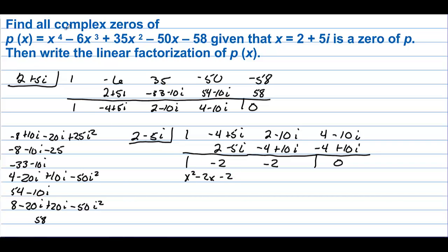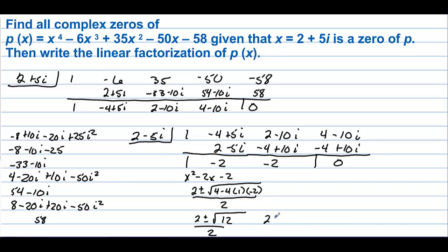Now x squared minus 2x minus 2 doesn't factor, but we have the quadratic formula. We have negative B plus or minus the square root of B squared minus 4AC all over 2A: so 2 plus or minus the square root of 4 plus 8, which is 12, all over 2. That simplifies to 2 plus or minus 2 times the square root of 3 all over 2, giving 1 plus or minus the square root of 3.